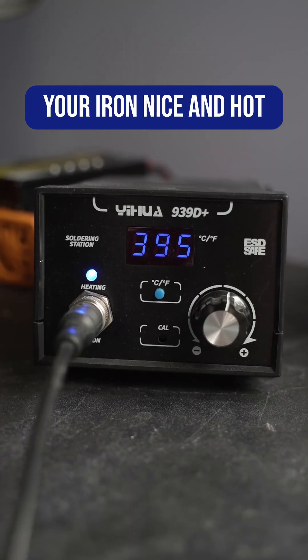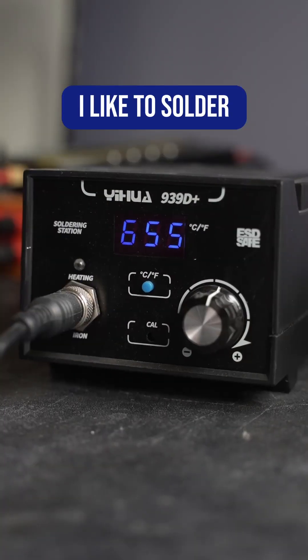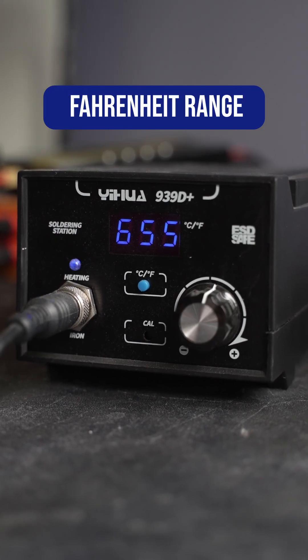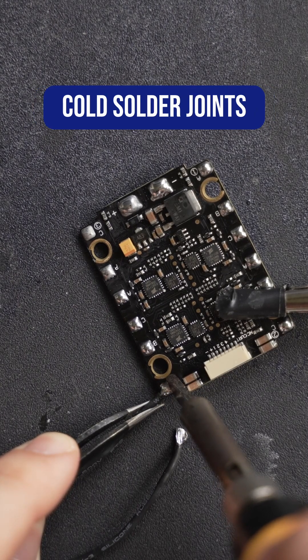Make sure to have your iron nice and hot, but not completely maxed out. I like to solder in the 600 degree Fahrenheit range. This will prevent any cold solder joints from forming.